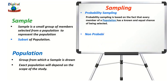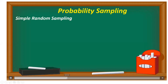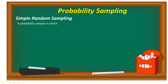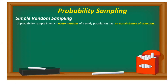Non-probability sampling involves selection based on convenience and other criteria, allowing you to easily collect initial data. The main focus is that it allows you to select samples based on convenience. Probability sampling is based on the fact that every member of the population has a known and equal chance of being selected. There are four types of probability sampling. The first is simple random sampling — a technique in which every member of the study population has an equal chance of being selected, and the selection completely depends on chance and randomness.